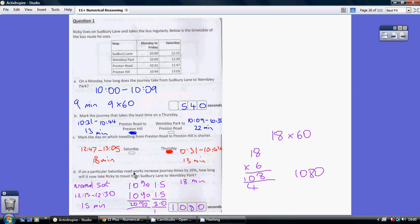If on a particular Saturday, roadworks increased journey times by 20%, how long will it now take Ricky to travel from Sudbury Lane to Wembley Park? So, Saturday, Sudbury Lane to Wembley Park. Well, on a normal Saturday, 12.15 to 12.30 is 15 minutes.